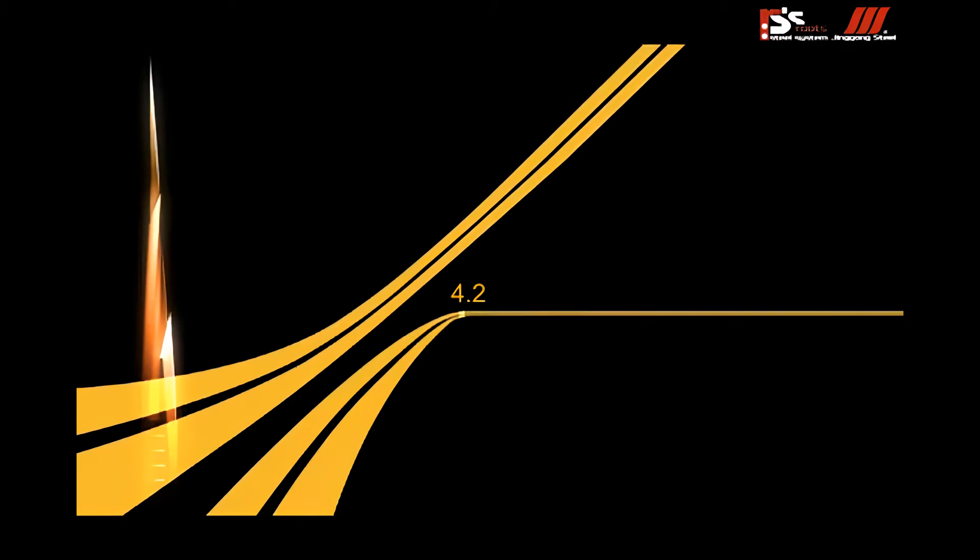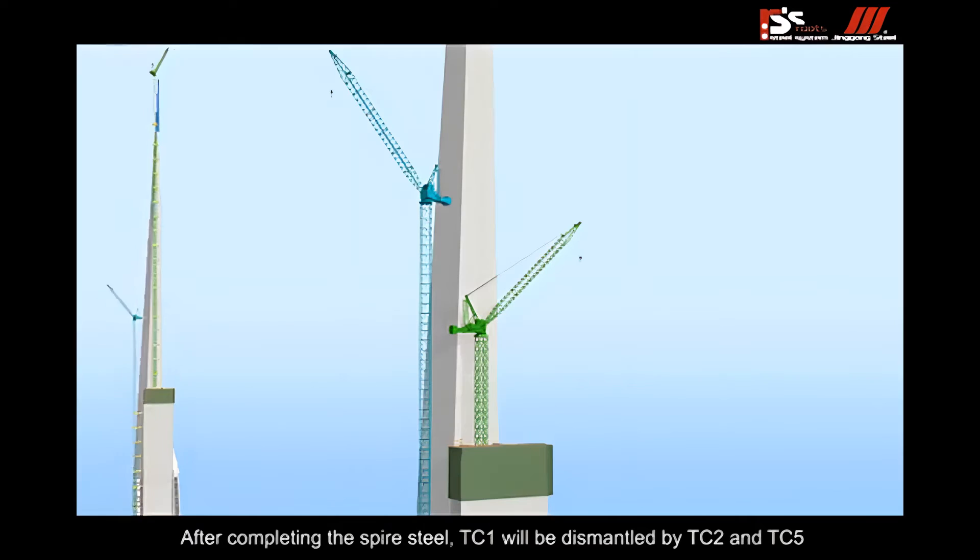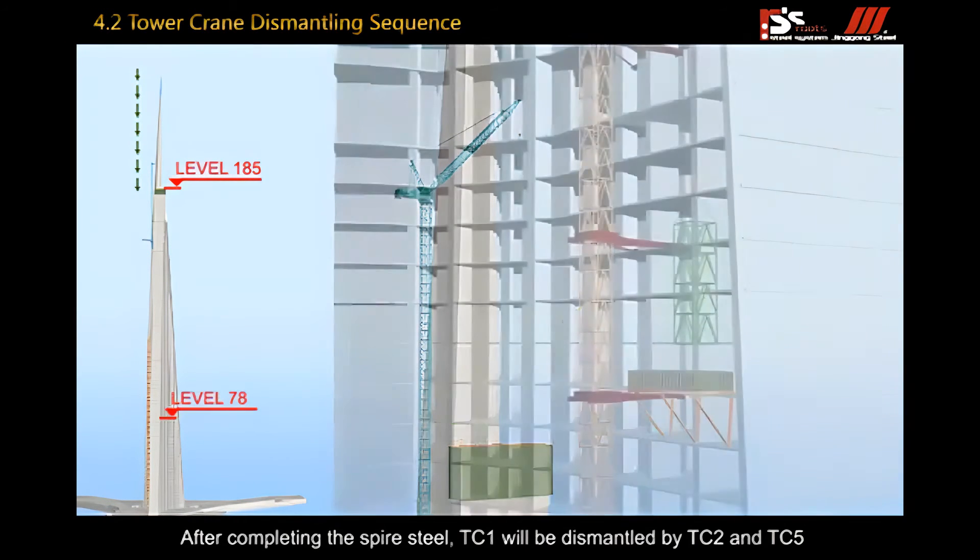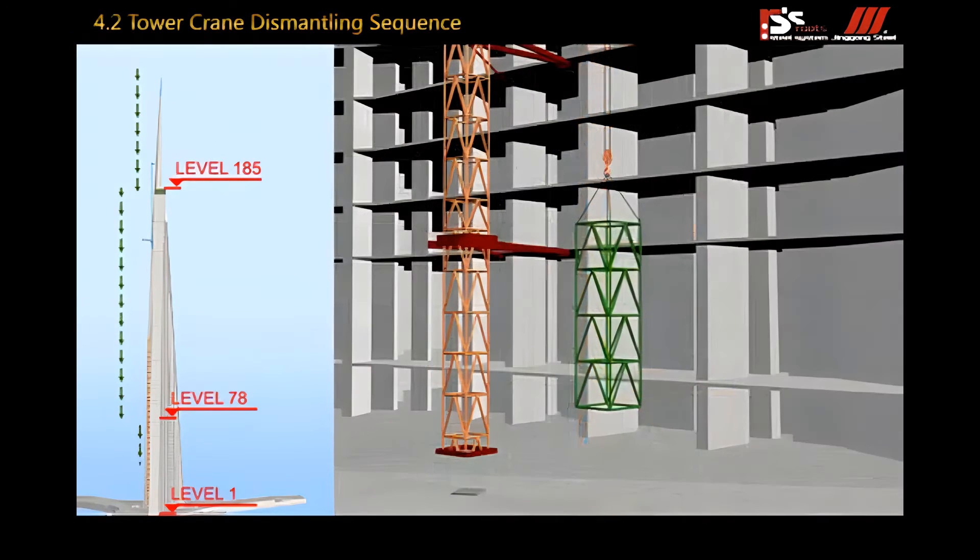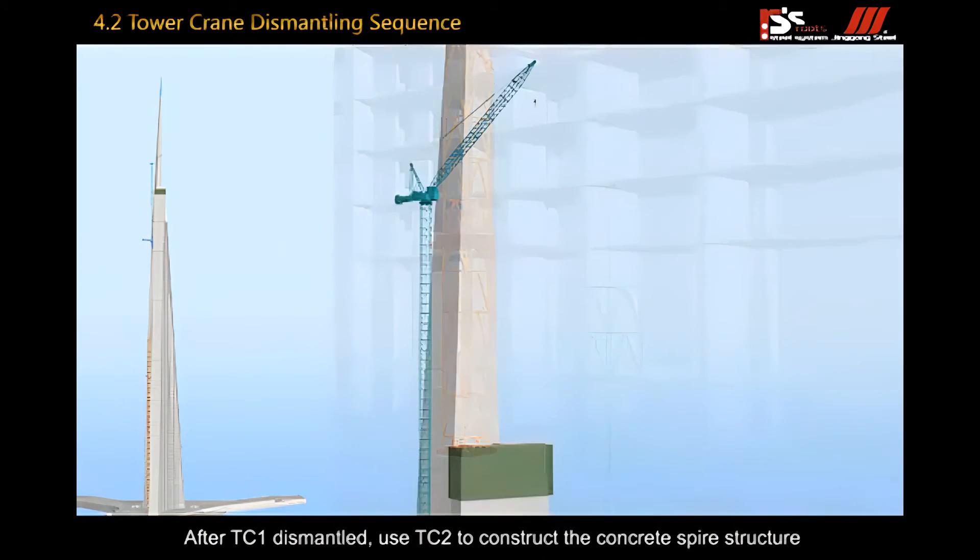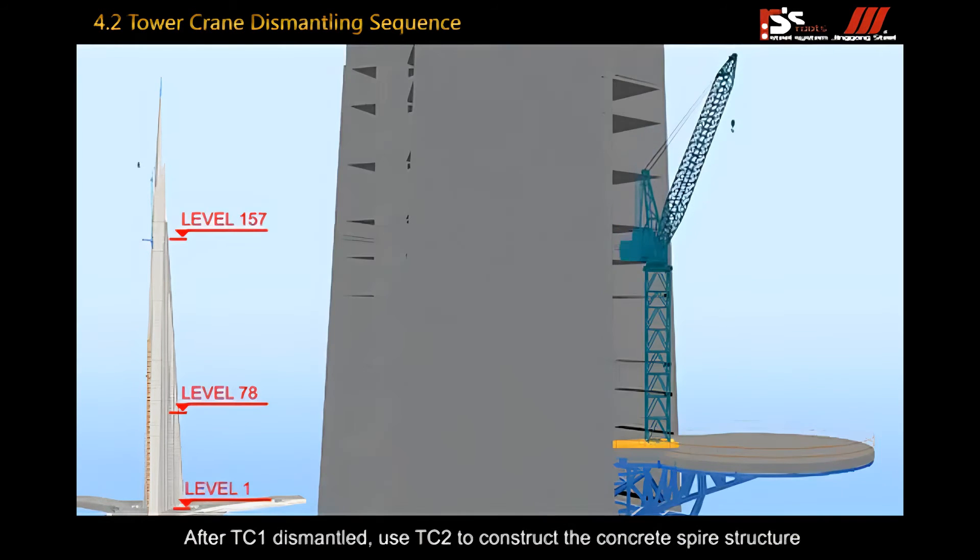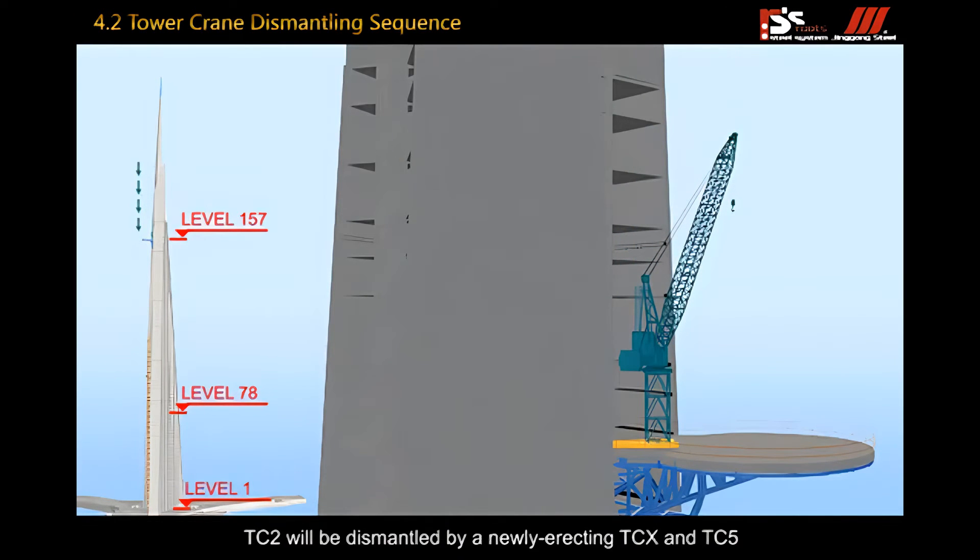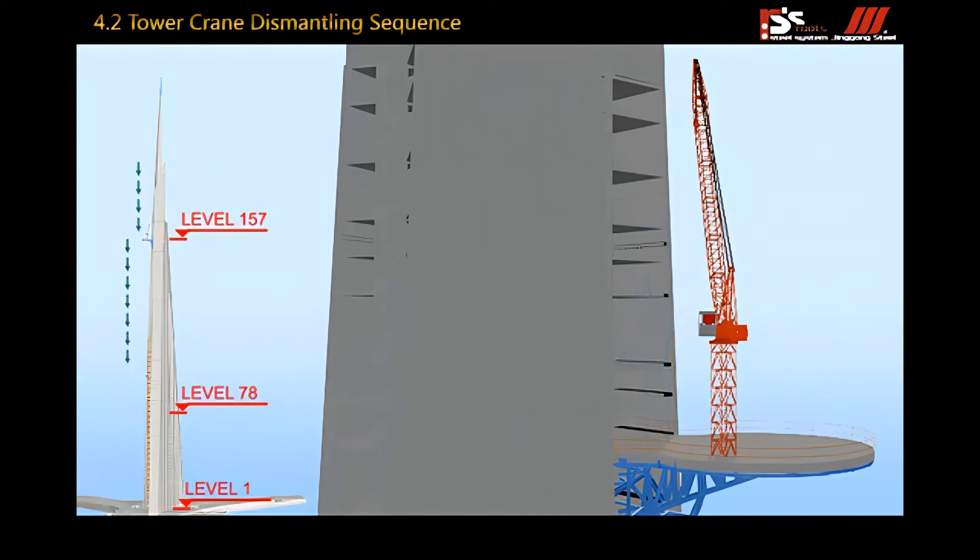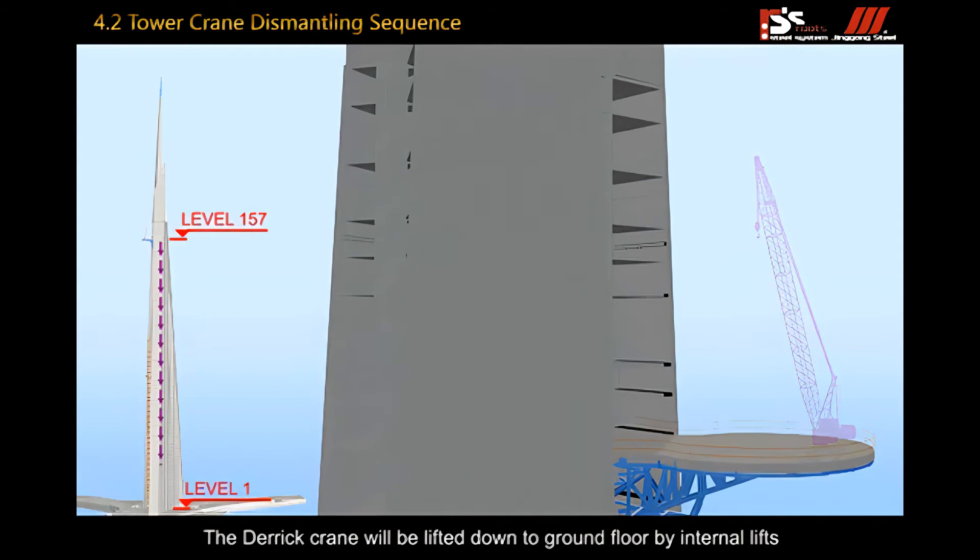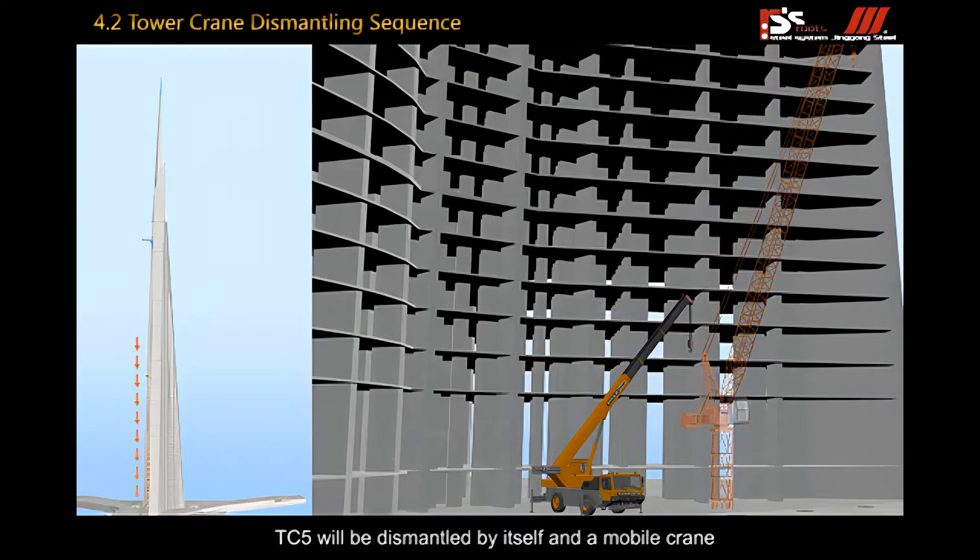4.2 tower crane dismantling sequence. After completing the spire steel, TC1 will be dismantled by TC2 and TC5. After TC1 is dismantled, use TC2 to construct the concrete spire structure. TC2 will be dismantled by a newly erected derrick on the spire structure. TC6 will be dismantled by another newly erecting derrick crane. The derrick crane will be lifted down to ground floor by internal lifts. TC6 will be dismantled by itself and mobile crane.